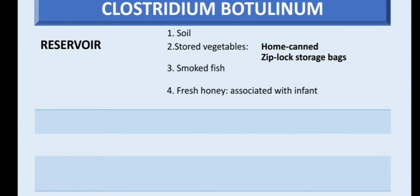the spores will not be able to germinate because there are no anaerobic conditions. But in infants, because there is a lesser amount of intestinal flora, the Clostridium spores will germinate and cause infection.